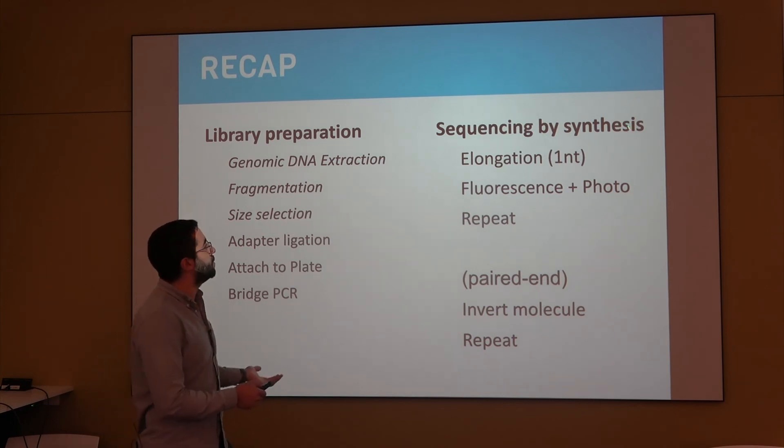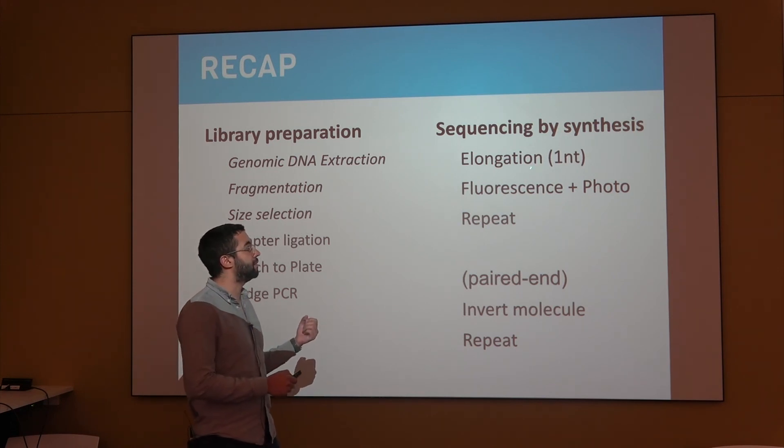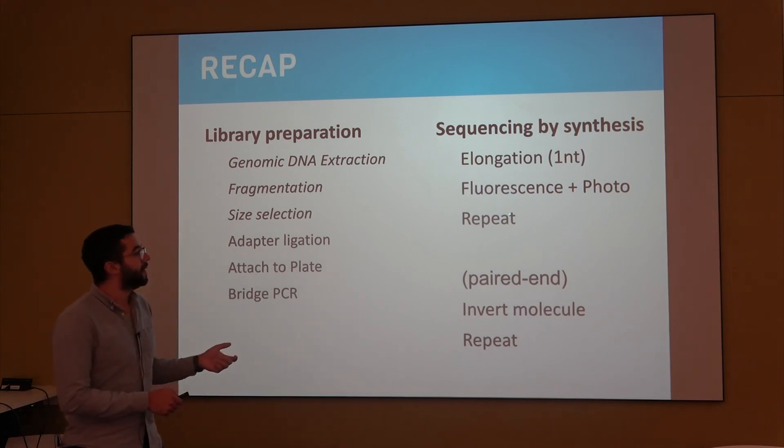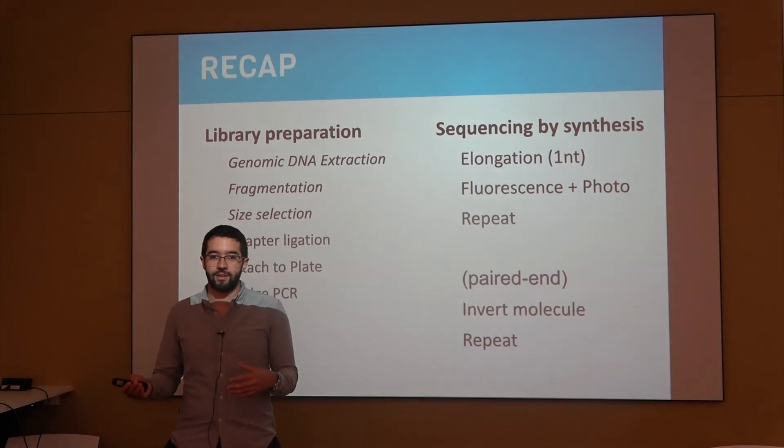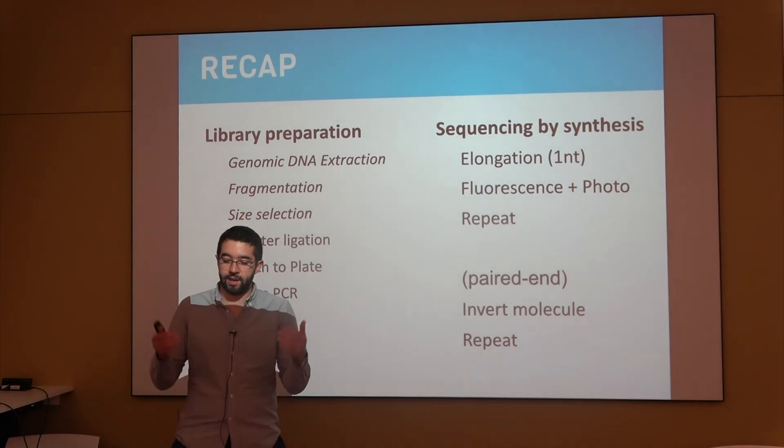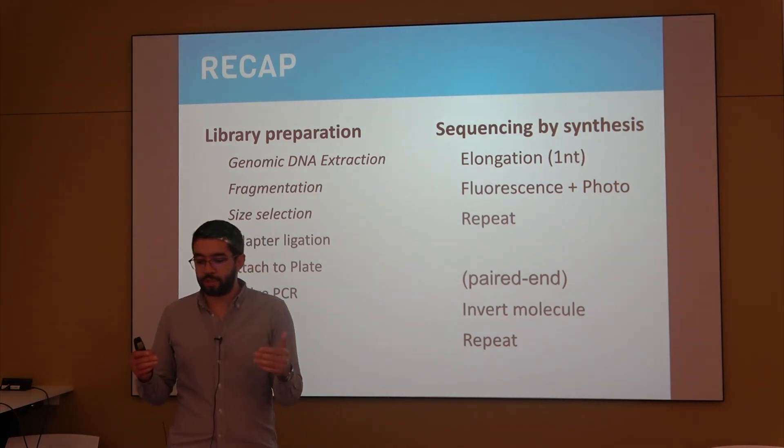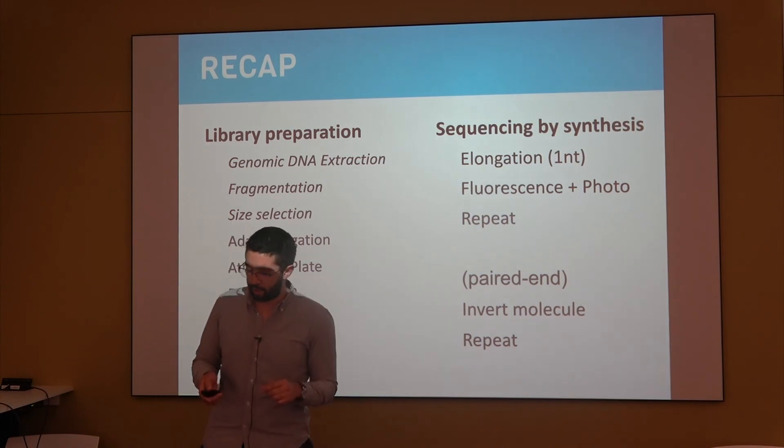And then the sequencing part can take place, which is elongation, one nucleotide at a time. You add the fluorescence and take a picture, and then you repeat for another nucleotide, and repeat for another nucleotide. Then in the case that you're doing paired-end sequencing, you're going to have this process on one side of the DNA, and then on the other side of the DNA, and those are going to come out as two separate reads on the same location.